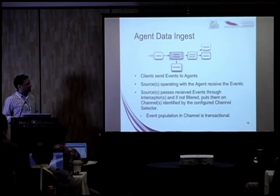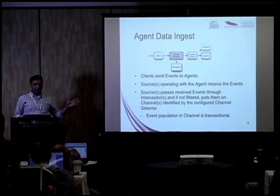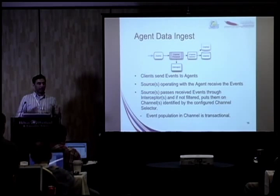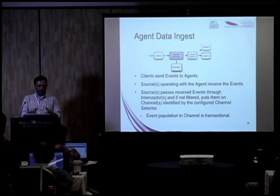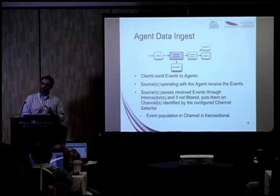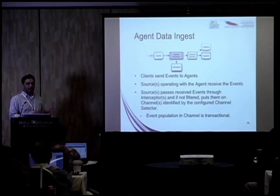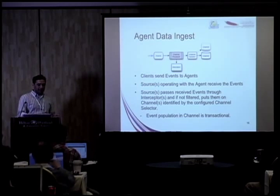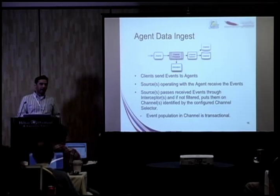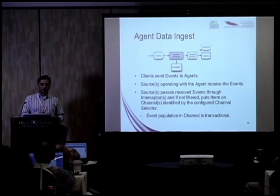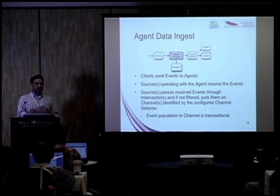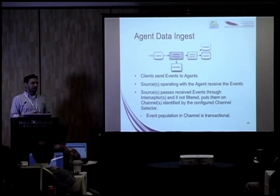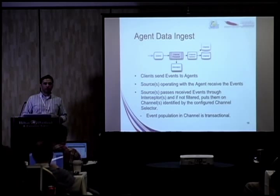This is how an agent takes in data. Hypothetical data comes into your agent and the source receives it. It talks to a framework component called the channel processor — which is grayed out because it's not replaceable. Everything else is replaceable: you could write your own sources, interceptors, channel selectors, and channels. The channel processor applies the configured interceptors on top of the events. Once the interceptors allow these events to proceed down the ingest pipeline, the channel processor invokes the configured selector to identify the set of channels the event information needs to go to.